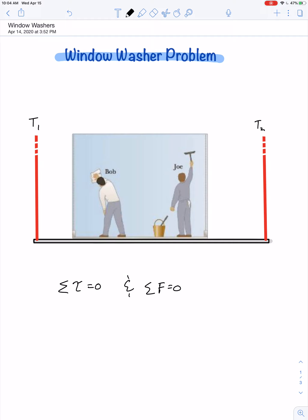One of the window washers, Bob, has a mass of 80 kilograms, and his partner Joe has a mass of 70 kilograms. The bucket of soapy water has a mass of 20 kilograms, and the whole scaffold has a mass of 150 kilograms.